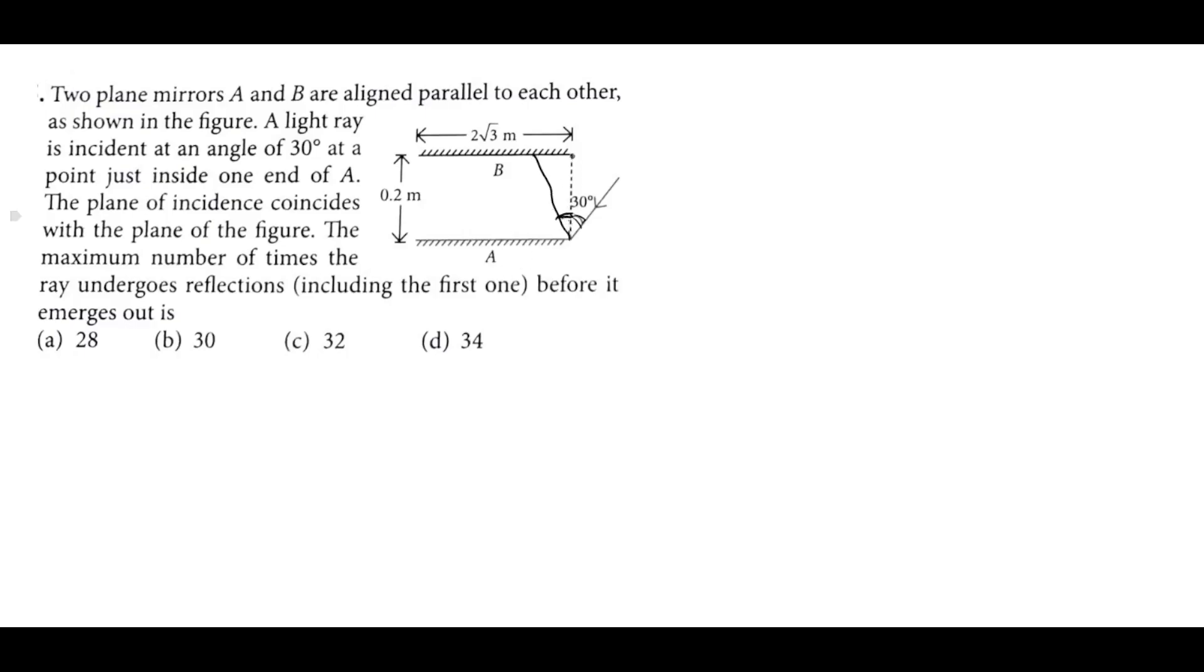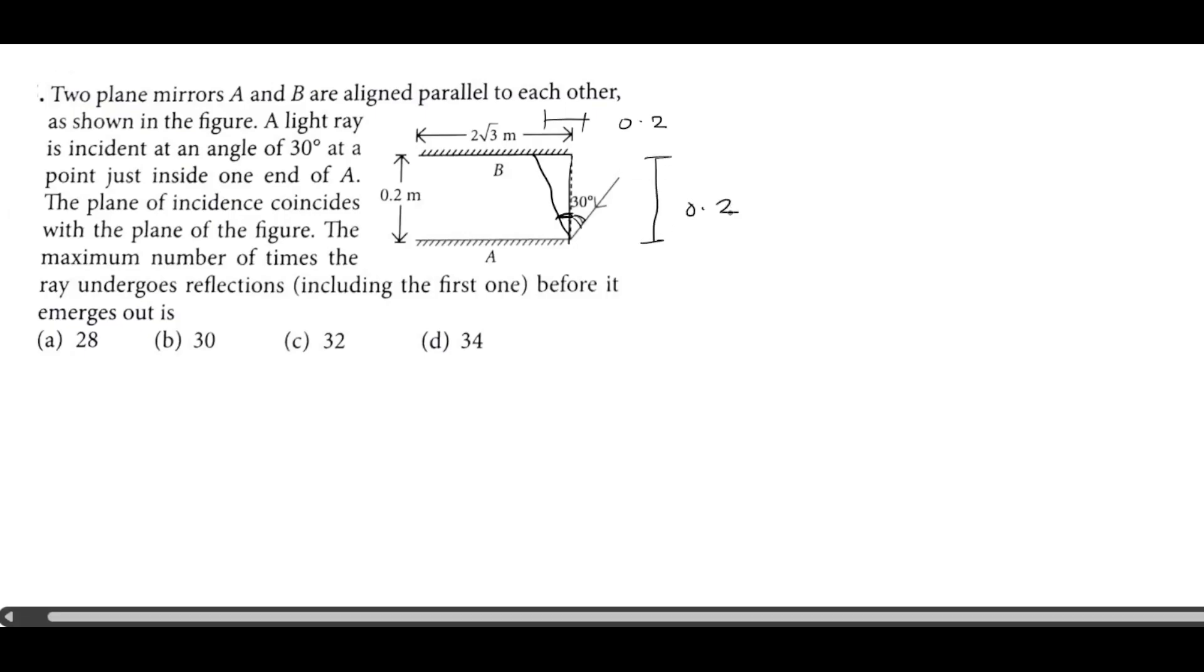If this angle is 30 degrees, it will be 0.2. So this horizontal length is 0.2. Horizontal length is vertical. Vertical height is 0.2.